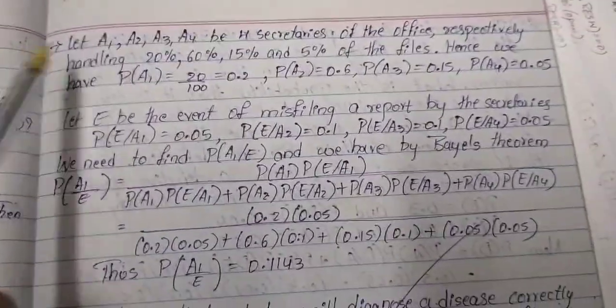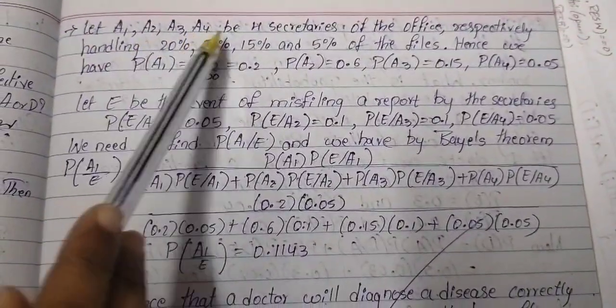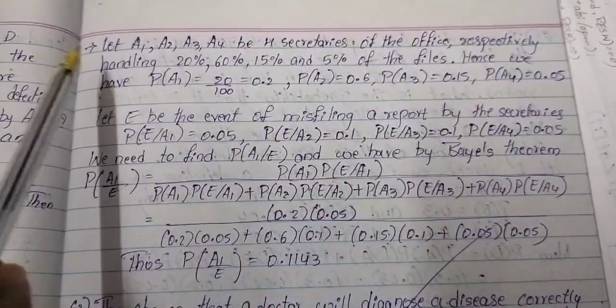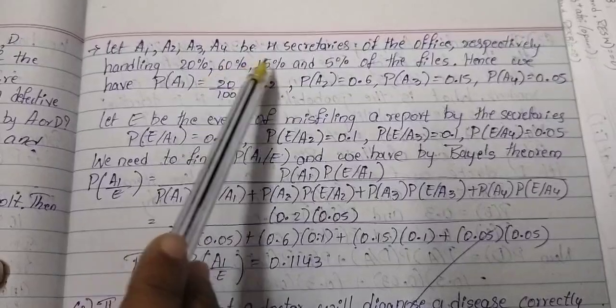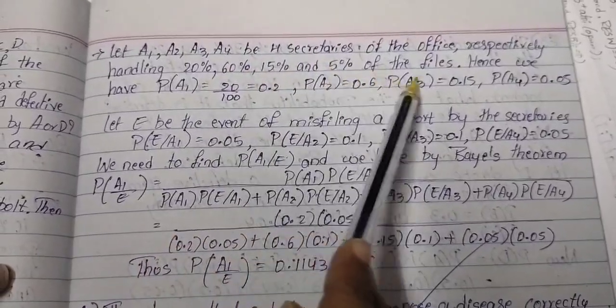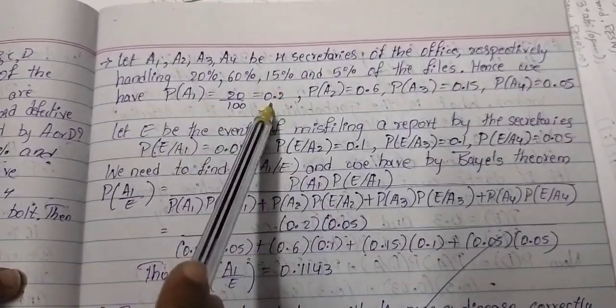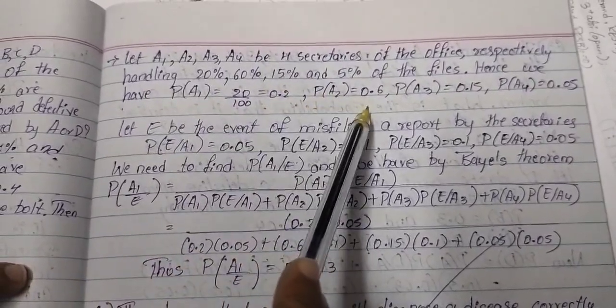Solution: Let A1, A2, A3 and A4 be four secretaries of the office respectively handling 20%, 60%, 15% and 5% of the files. Hence we have P(A1) = 0.2, P(A2) = 0.6,